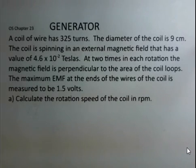I'm going to discuss a generator here that's made with a circular coil of wire, 325 turns, the diameter is given 9 centimeters. Somehow somebody creates an external magnetic field that this coil spins in.